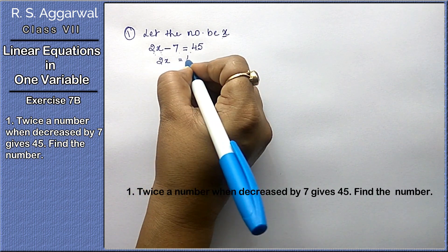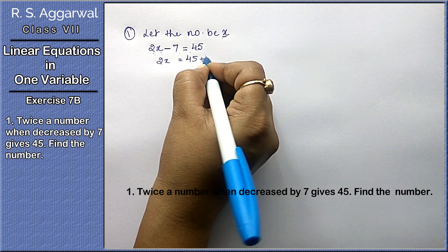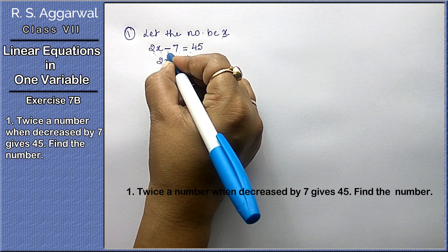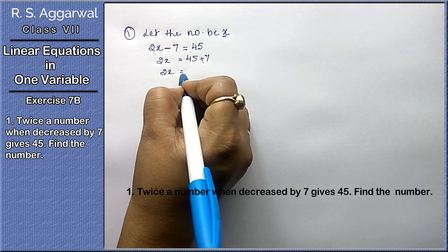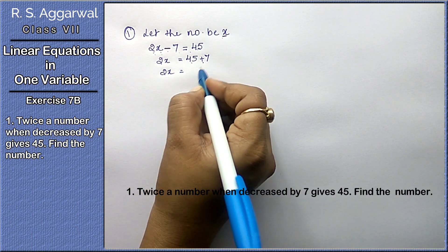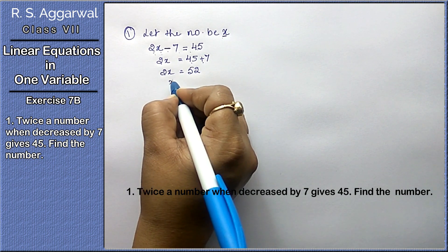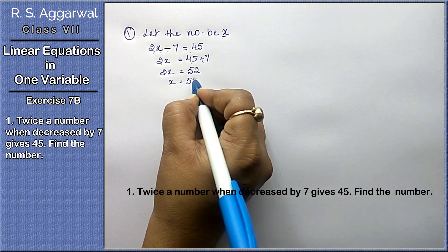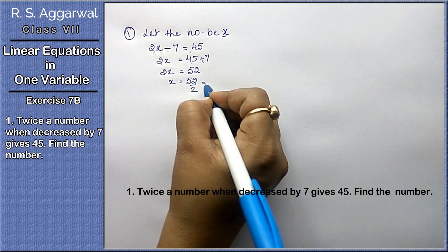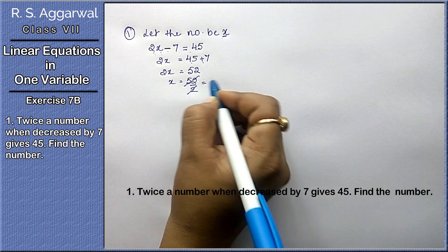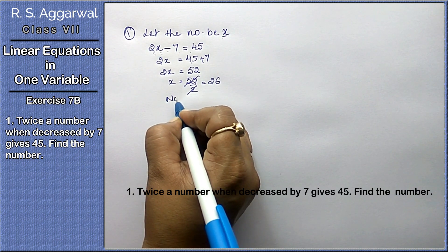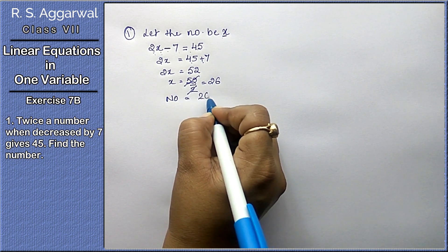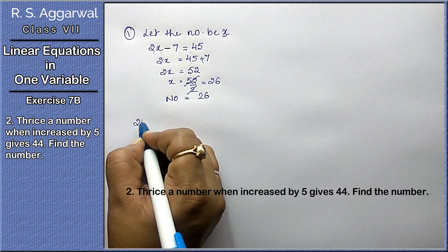Now we know that x terms go on one side, non-x terms go on the other side. This minus here becomes plus there. 2x equals 45 plus 7 is 52. x equals 52 upon 2, which is 26.